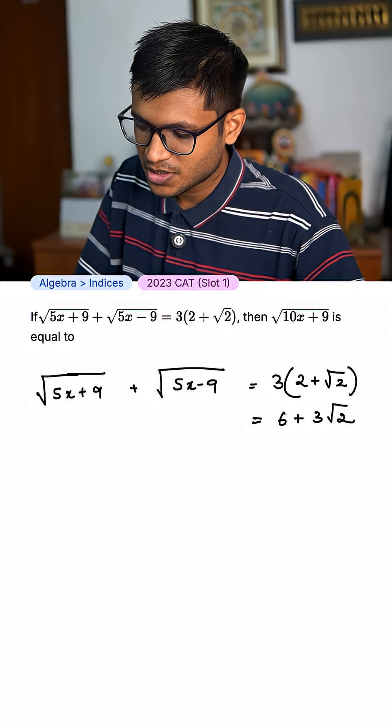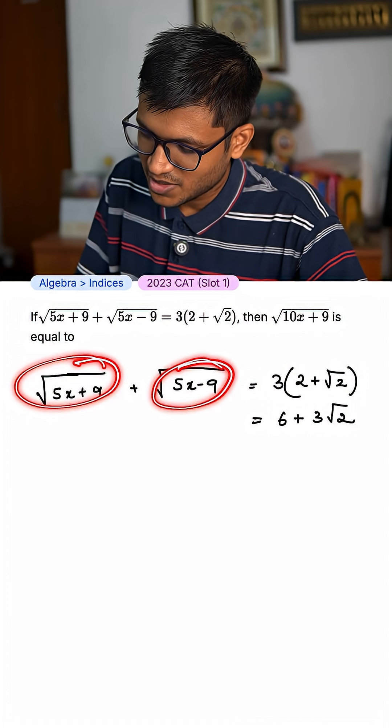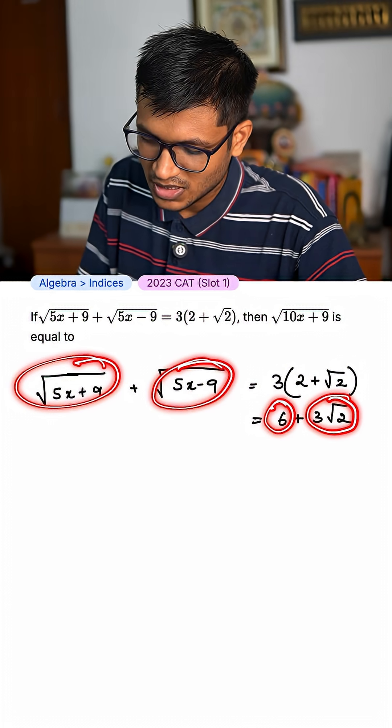Okay, let me expand this. I get 6 + 3√2. I have a root being added to another root. Can I make this into a root and add it to another root? I can.